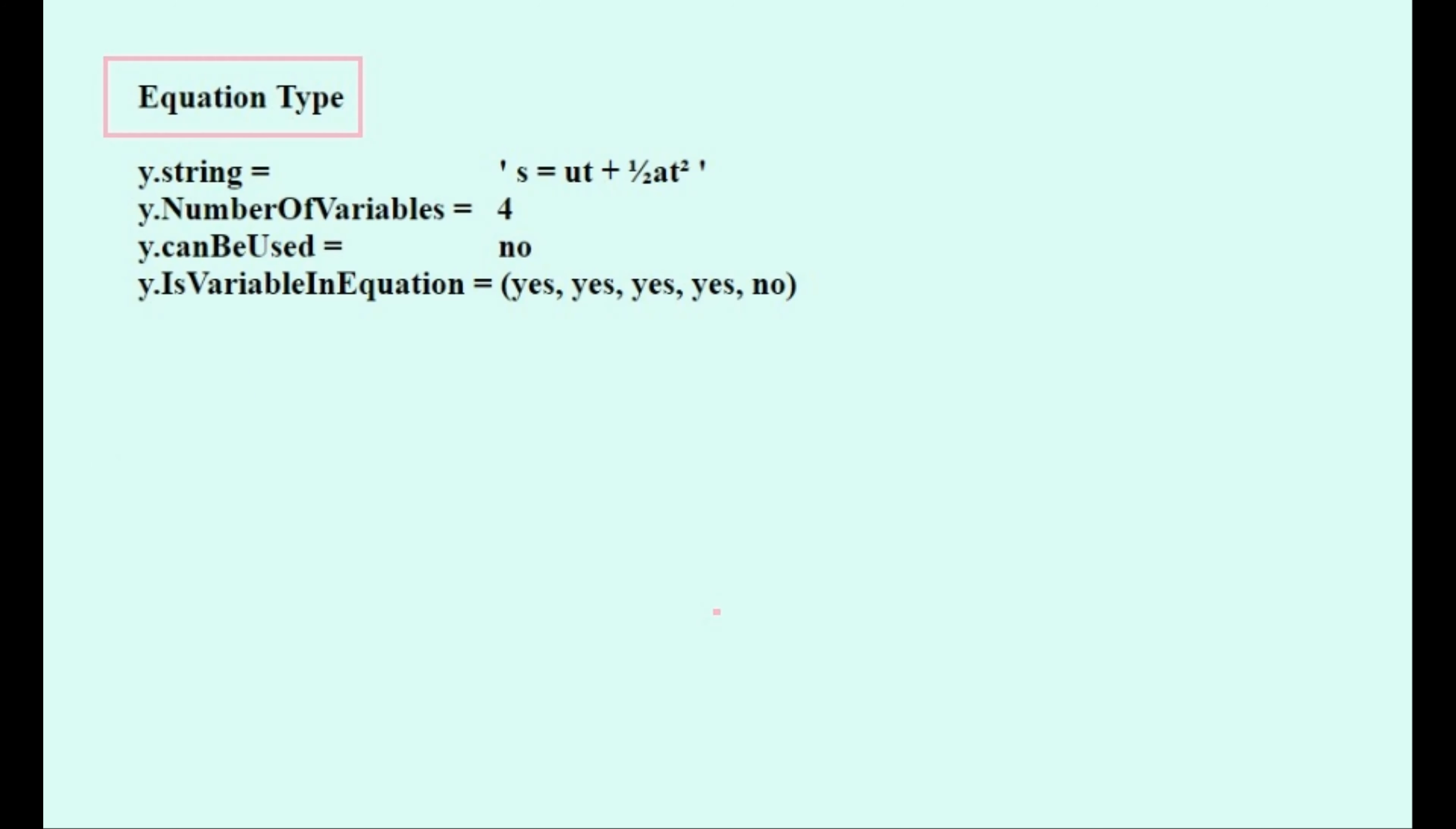Then we'd have to create another structured type called an equation type. Here is an example of what can be found in one: a string that displays what the equation looks like as a mathematical expression, the number of variables in it (which is 4 - you can count them up to see this for yourself), and whether it can be used. If all of the values have been found, then it can't be used again, and this attribute has to be set to no.